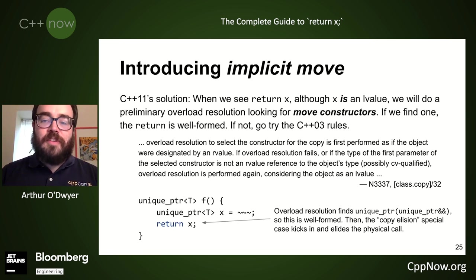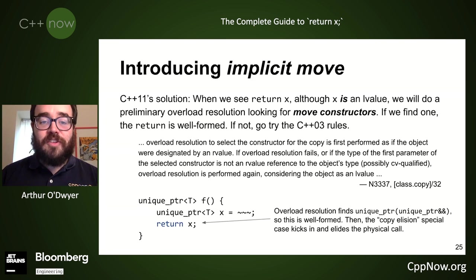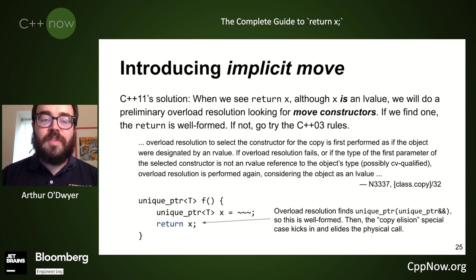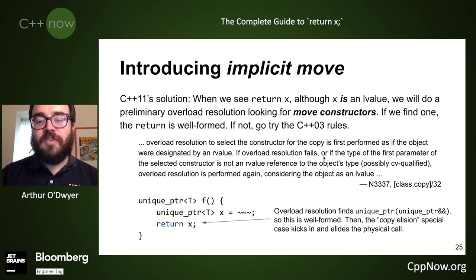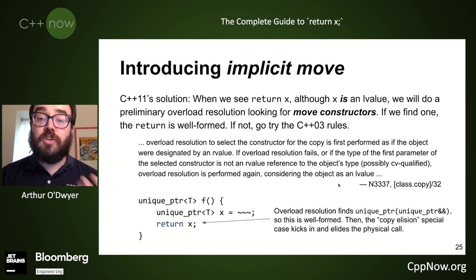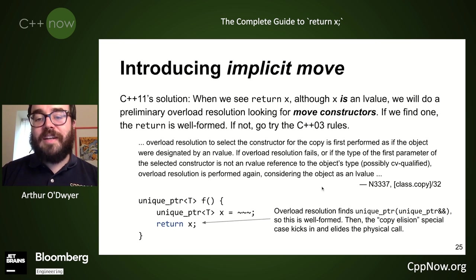In the C++11 standard: 'overload resolution to select the constructor for the copy is first performed as if the object were designated by an rvalue; and if overload resolution fails, or the type of the first parameter of the selected constructor is not an rvalue reference to the object's type, overload resolution is performed again considering the object as an lvalue.' This two-pass mechanism is the essence of implicit move.